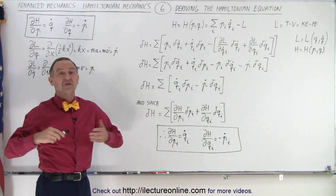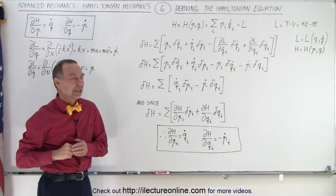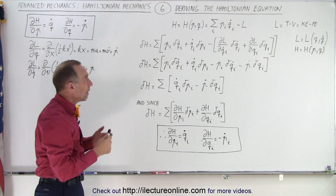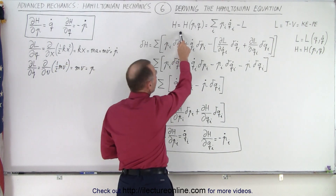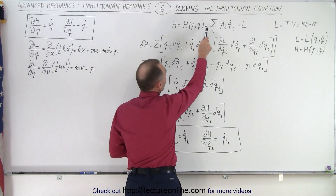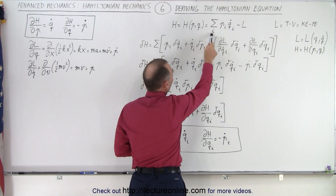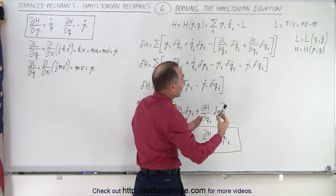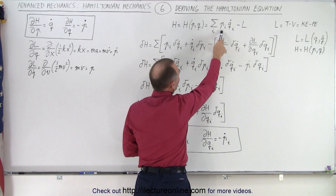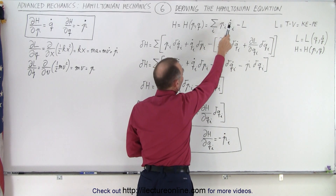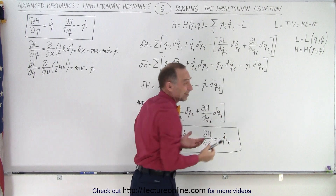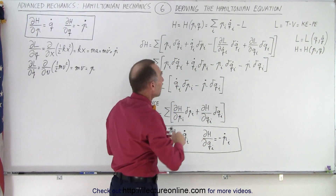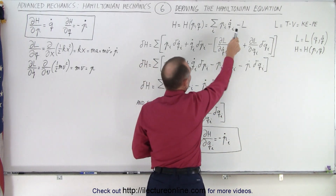We need to be able to justify that. In order to do so, we need to go back to our basic equation for the Hamiltonian, which is equal to the sum over all the dimensions in which the problem acts of the products of the momentum times q-dot — remember q-dot is the velocity in that direction — minus the Lagrangian.